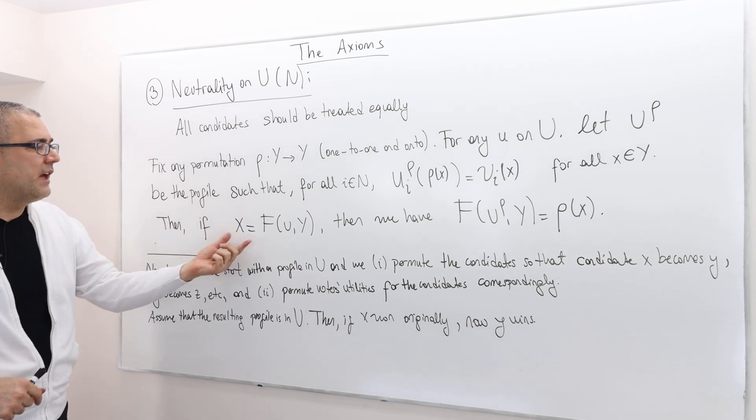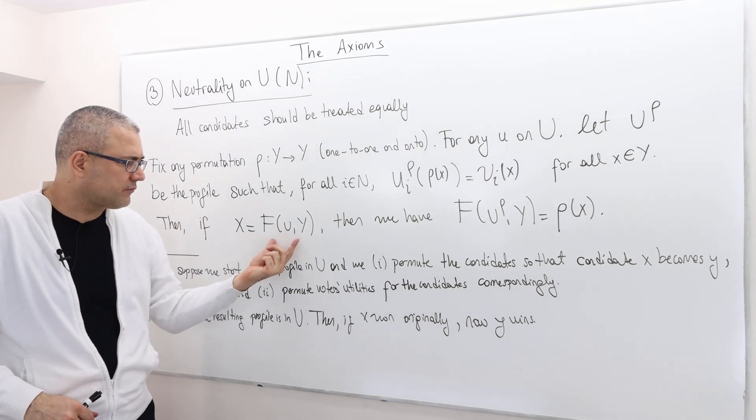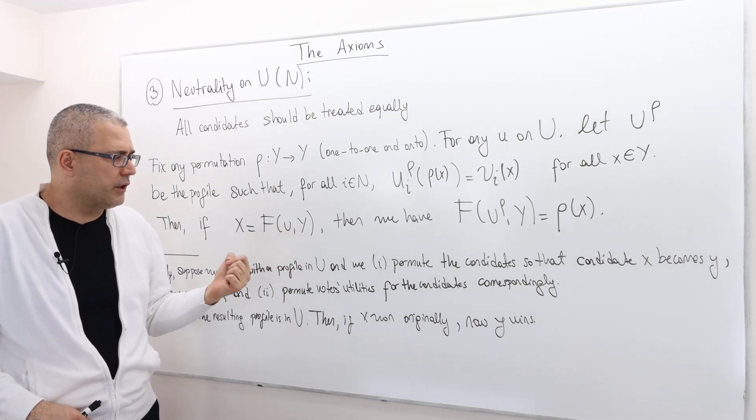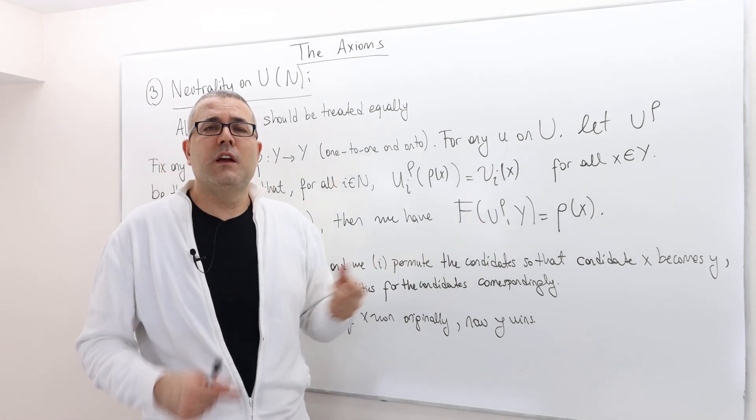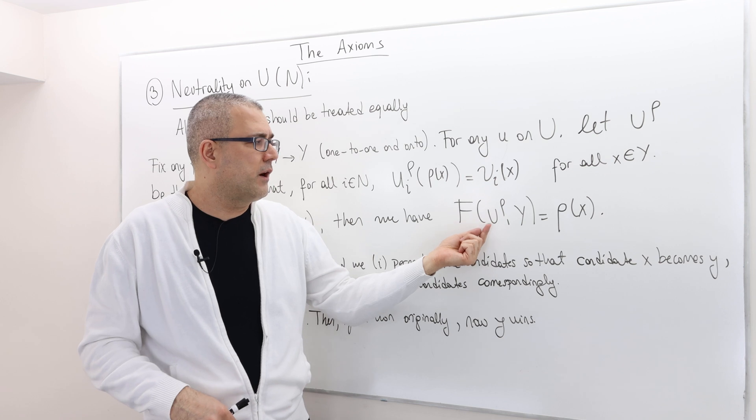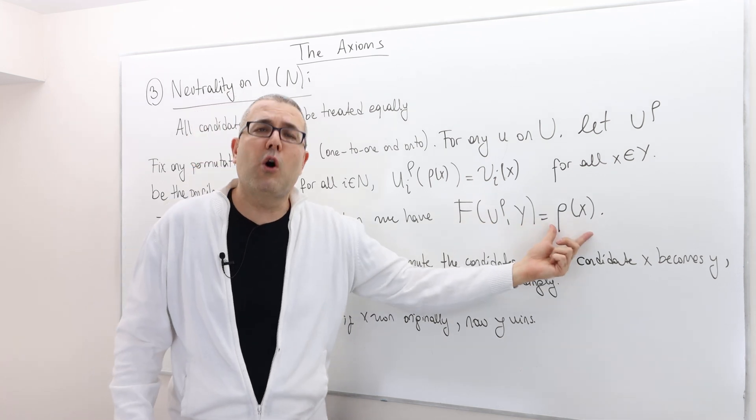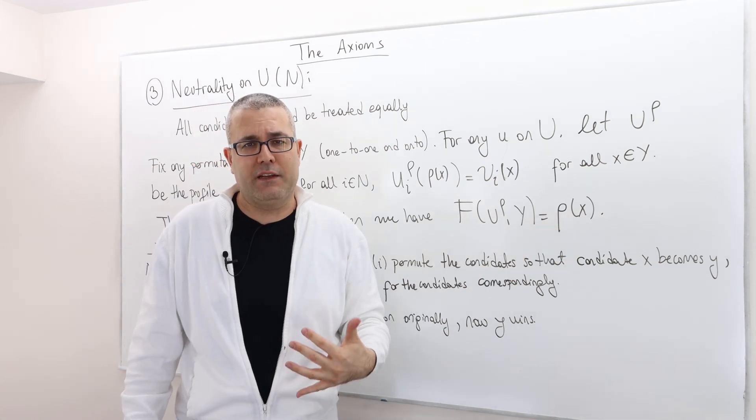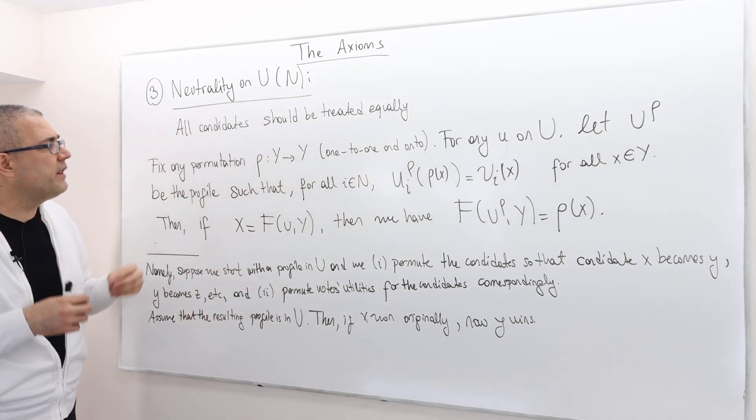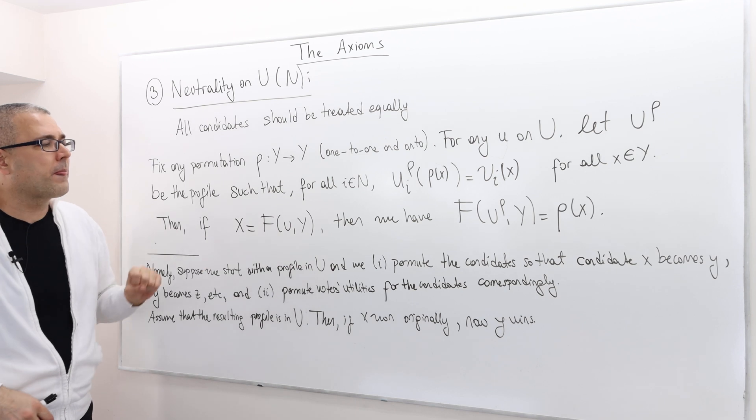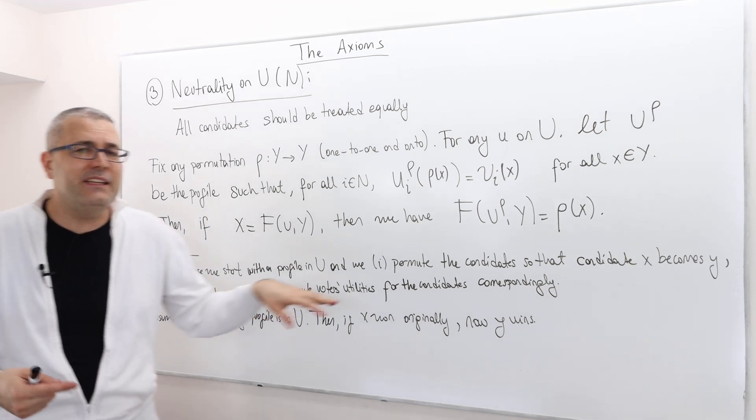If x is elected under this preference profile u, then under this permuted preference profile U of rho, rho of x should be elected. Namely,